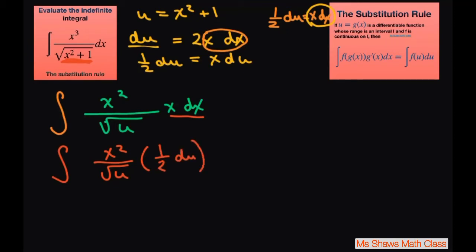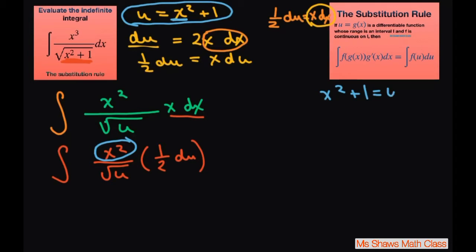The reason we broke it up that way is we still need to handle the x squared. We solve for x squared from our substitution: since u equals x squared plus 1, we get x squared equals u minus 1.